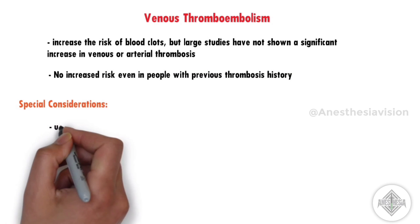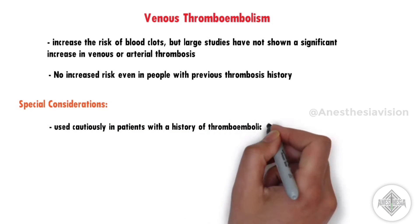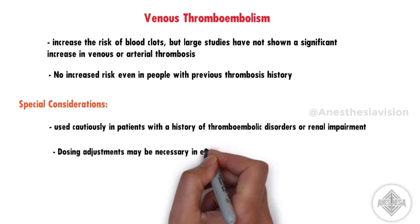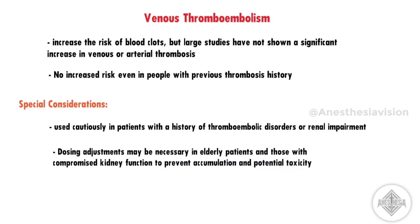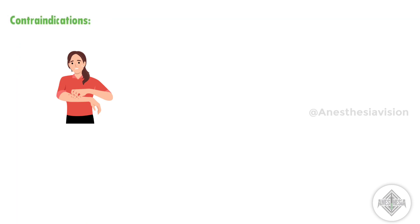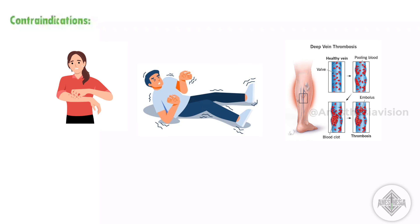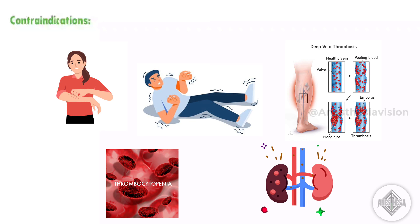Special considerations: TXA should be used cautiously in patients with a history of thromboembolic disorders or renal impairment. Dosing adjustments may be necessary for elderly patients and those with compromised kidney function to prevent accumulation and potential toxicity. Contraindications: It is contraindicated in persons allergic to tranexamic acid, those with a history of seizures, history of venous or arterial thromboembolism or active thromboembolic disease, and severe kidney impairment patients.